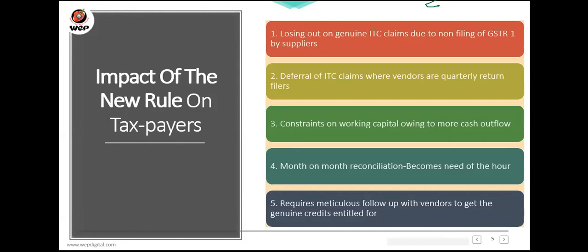Question: what are the consequences if excess ITC is claimed? Same as earlier — if you voluntarily declare the excess, you pay 18% interest per annum. If the officer finds out, you pay 24% interest per annum. You should ensure you don't claim extra — always rely on your books inward logs, check them, and take whichever is lower between your books and 120% of GSTR 2A.